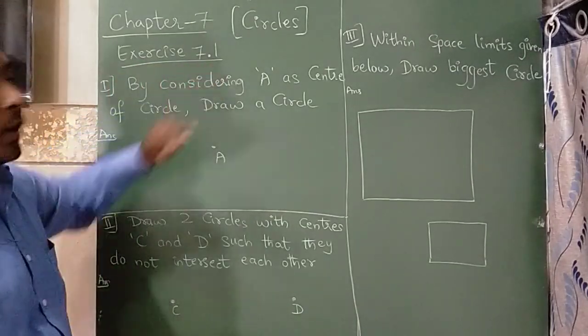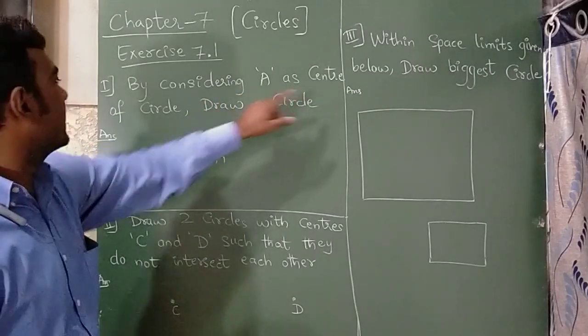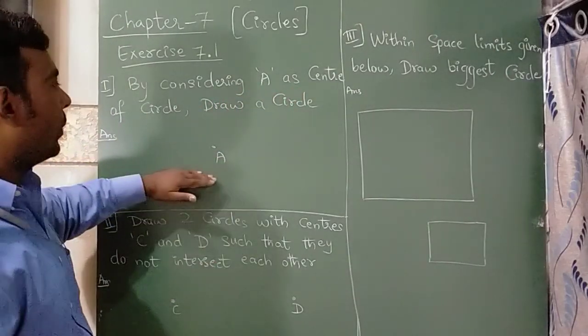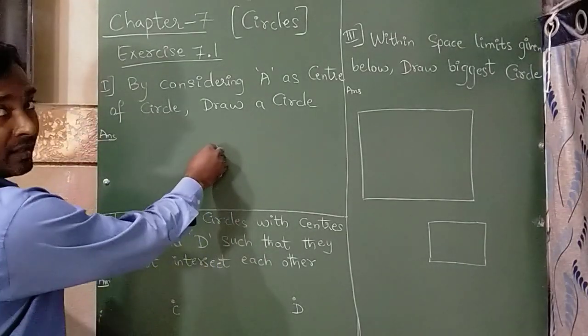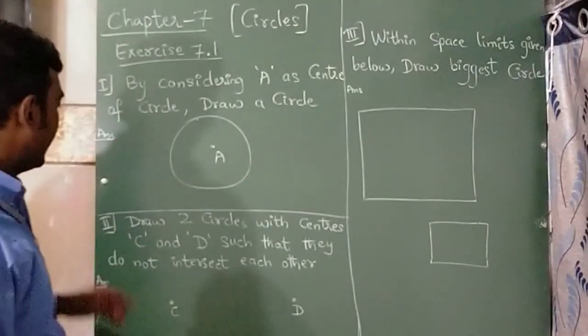In exercise 7.1, the first question says, by considering A as a center of the circle, draw a circle. So they are telling draw a circle. From here, take any centimeter and draw a circle. Over.